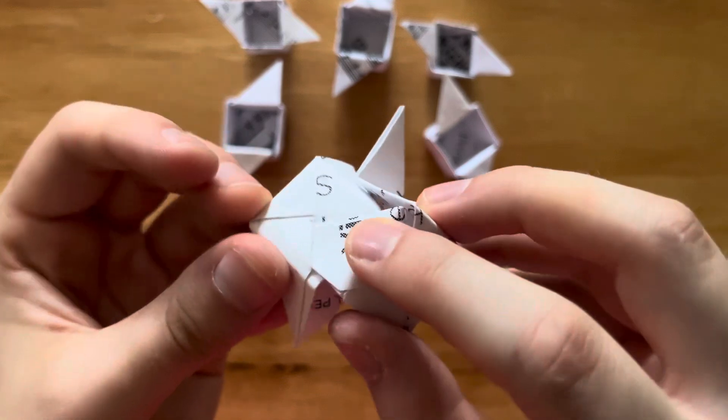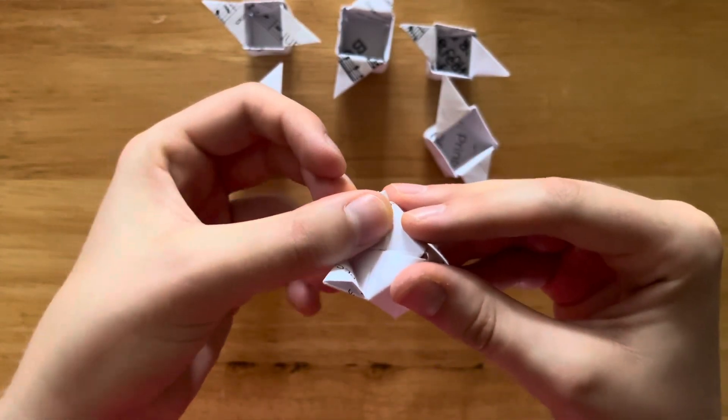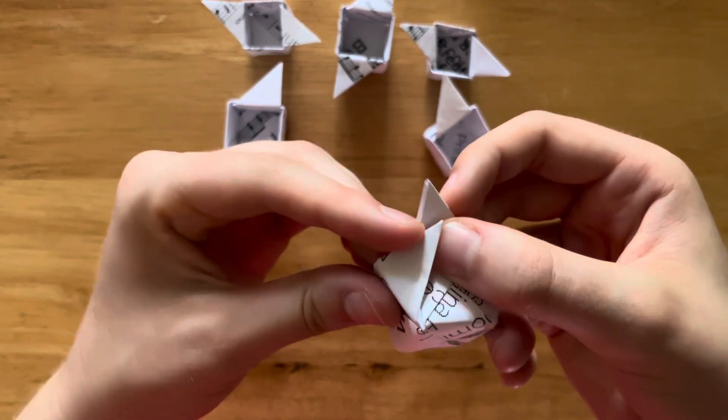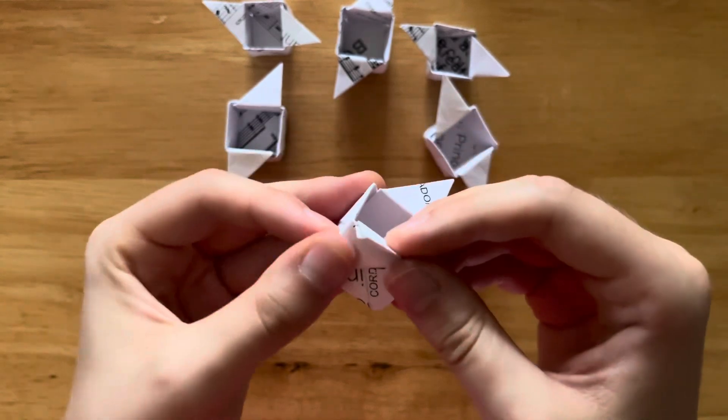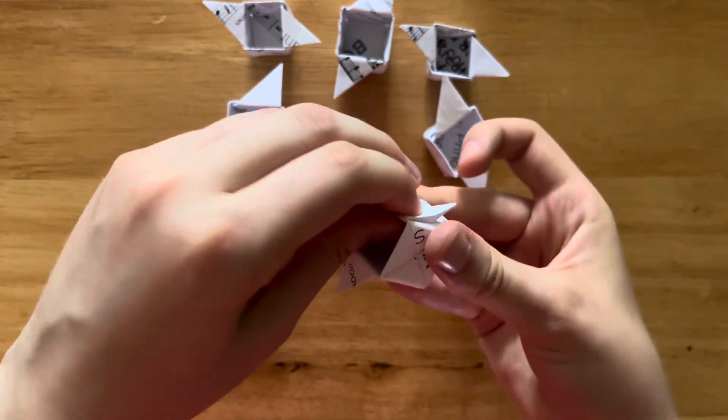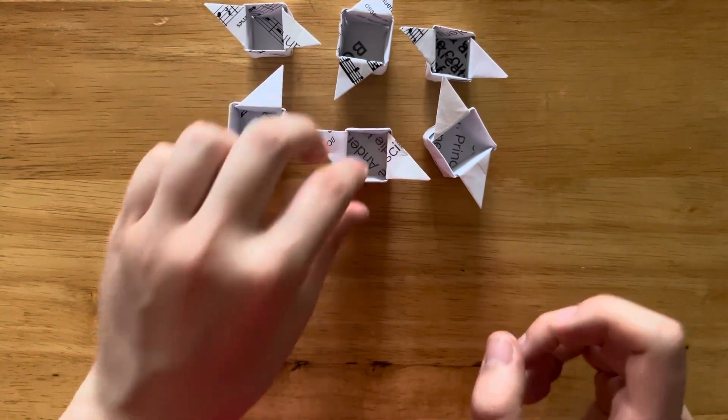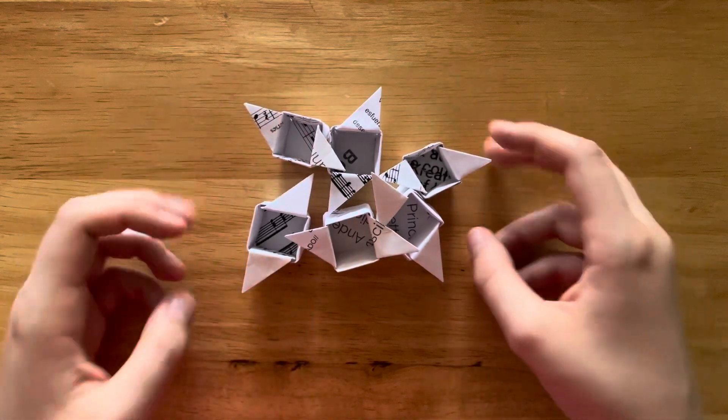So again, flap in pocket, flap in pocket, and lastly flap in pocket. There we go. You can see I bend the little top flaps down a bit. But now we have all of our little modules assembled.